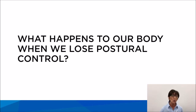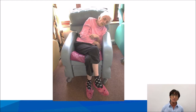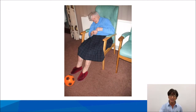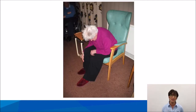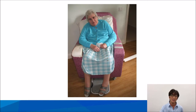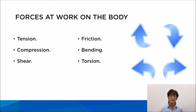So what happens to our body when we lose postural control? This is a photograph of a lady in a care home, and as you can see she has fallen to one side. She's no longer able to hold herself upright against gravity and her weight is all going through one side of her body. These photographs show that these clients have all lost the ability to hold themselves upright against gravity. When someone is unable to hold themselves upright, there are destructive forces at work on the body - tension, compression, shear, friction, bending, and torque.